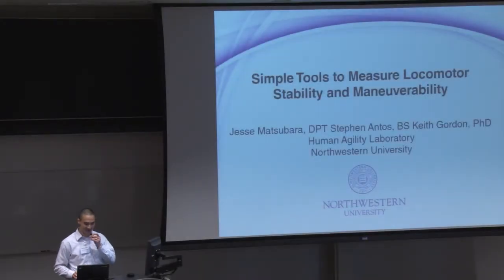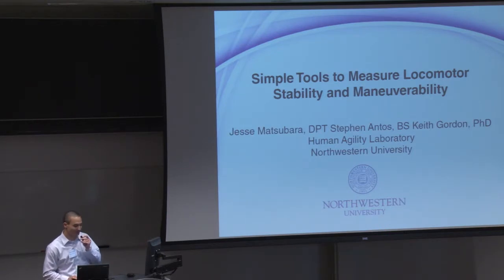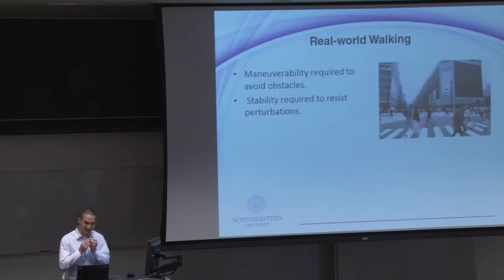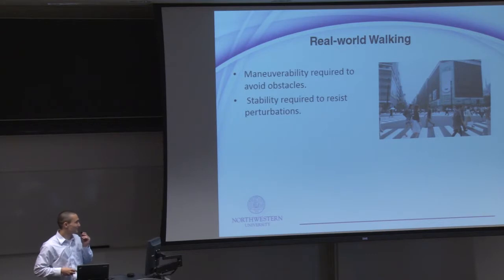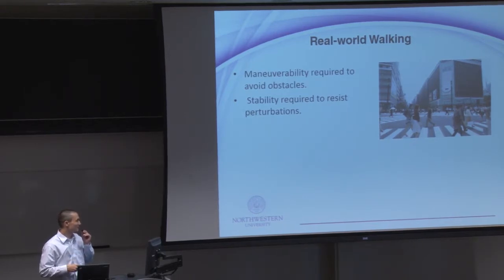So the title of my poster today is Simple Tools to Measure Locomotor Stability and Maneuverability. Stability and maneuverability are important in real world walking. To demonstrate this, if you would imagine trying to successfully navigate across this busy intersection that we saw earlier today, you require maneuverability to avoid the many other pedestrians also crossing the street. And you'd likely also require stability as you're walking through a crowd to resist the perturbation if you're accidentally bumped into.